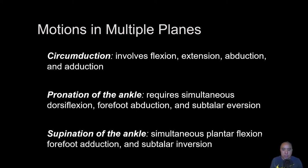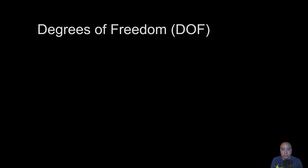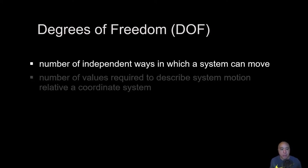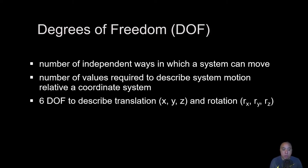Circumduction involves motion of either the glenohumeral or hip joint. The number of independent ways in which a system can move is known as degrees of freedom — the number of values required to describe the system's motion relative to a coordinate system. This typically indicates three degrees of freedom for translation and three degrees of freedom for rotation.